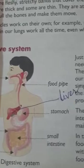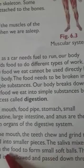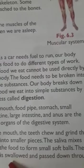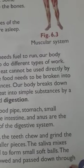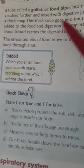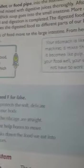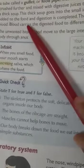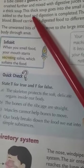In the mouth, the teeth chew and grind the food into smaller pieces. Saliva mixes with the food to form small soft balls. The food is swallowed and passed down through the food pipe to the stomach. Inside the stomach, the food is crushed further and mixed with digestive juices thoroughly. After two to four hours it looks like a thick soup.